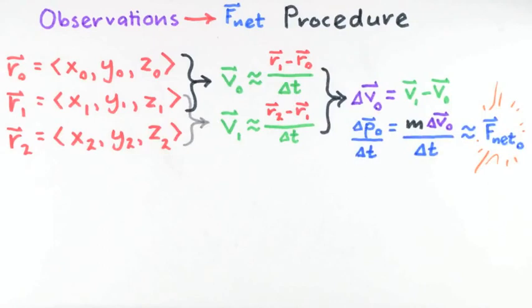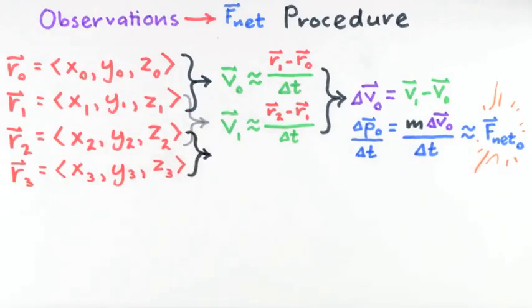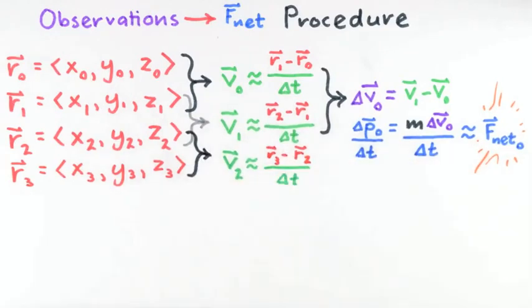We can get our next estimate of f net, a time interval delta t later, by taking the next position data point and repeating this process. In other words, with the new position data point, we compute a new velocity, which is now our new final velocity in computing a new delta v. Our old final velocity, from the last calculation, becomes our new initial velocity in this calculation.